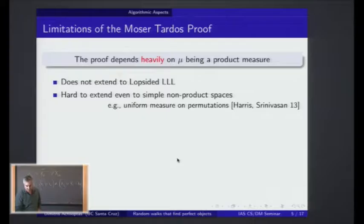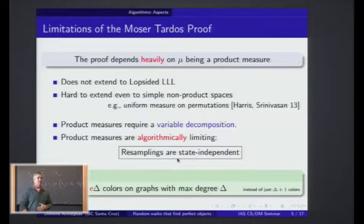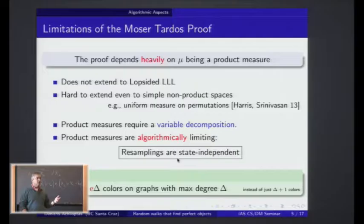Another limitation is that in order to have a product measure, you need some kind of a decomposition of the underlying space into variables, and something like that is not always readily available. For example, it could be that even the base set omega you would like to be a complicated set — like the set of all Hamiltonian cycles of a graph, or the set of all valid edge q-colorings of a graph. Both of these are sets that have very high complexity to describe. This requires that omega has a very simple description, and in general you don't want to have this description.